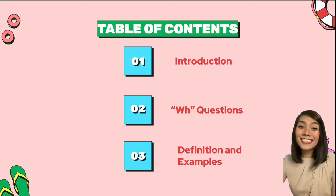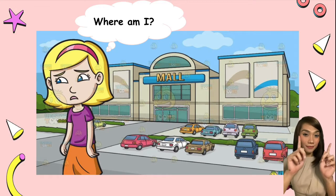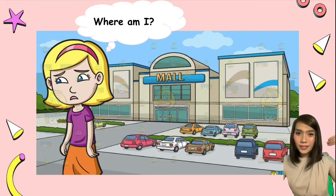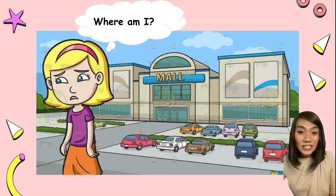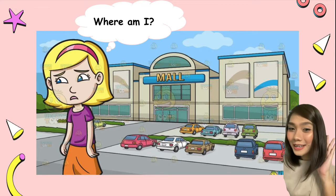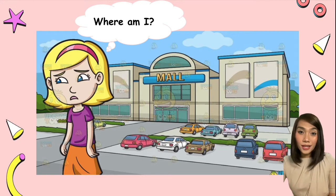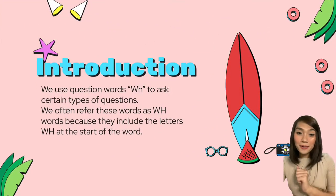The last part will be the definition and examples on how to use these five WH questions. Are you ready? It sounds exciting, right? Now, before we start, let's look at this picture here. This is a girl, right? What do you think is she thinking? She is in the mall, and in her mind there's a thought running: 'Where am I?' She's asking herself, 'Where am I?' She is in the mall, or she is at the mall. That is an example of a WH question — using 'WHERE.'